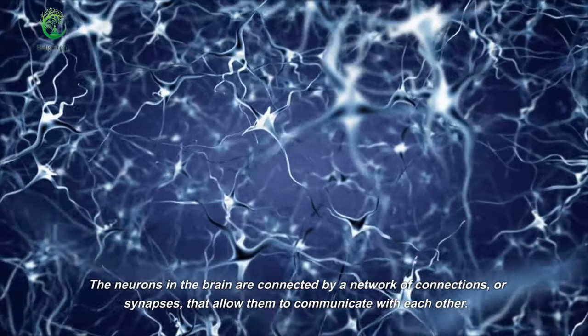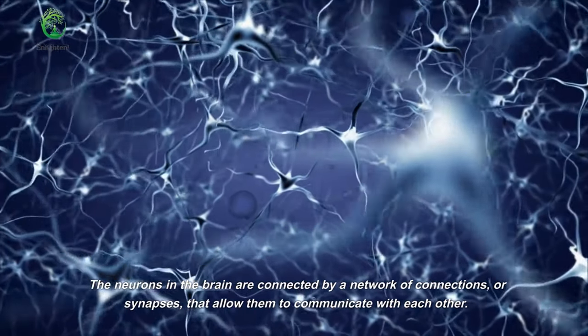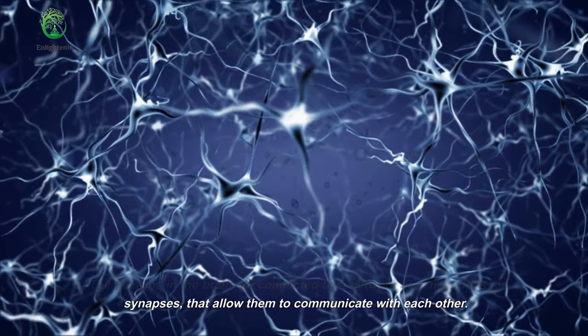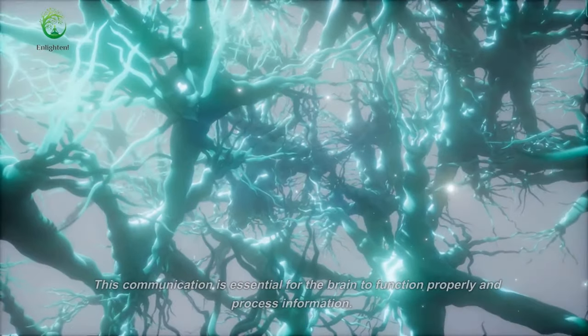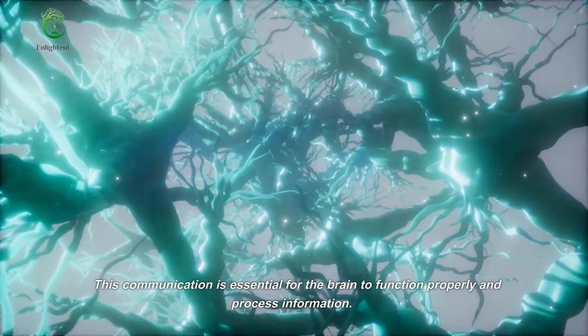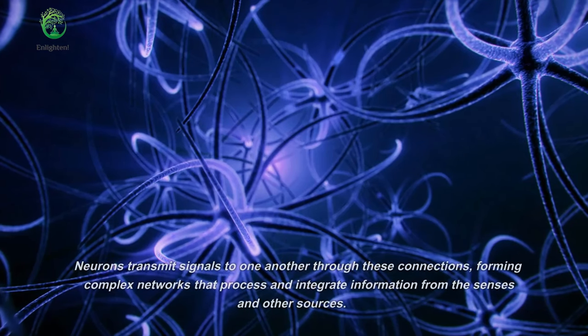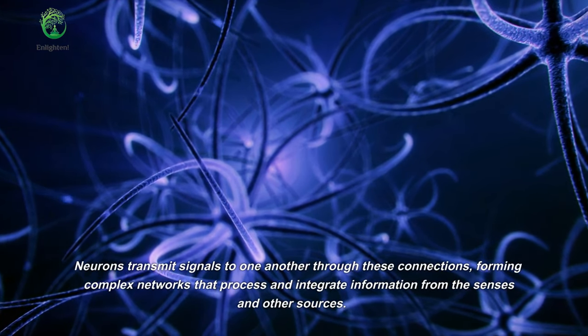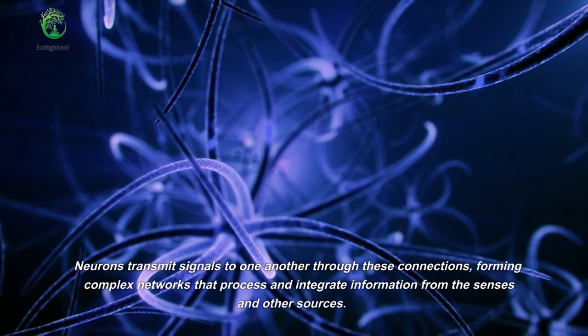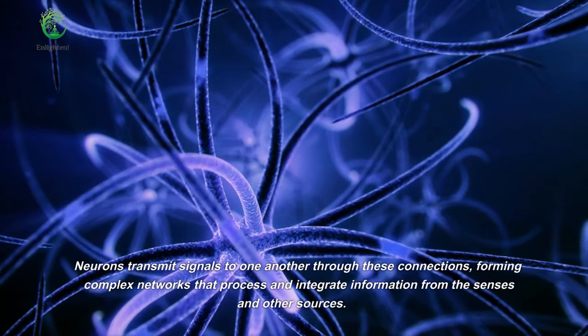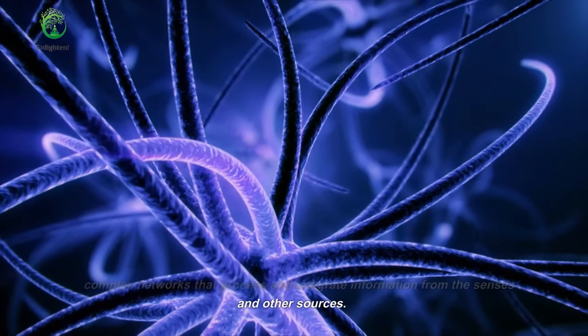The neurons in the brain are connected by a network of connections, or synapses, that allow them to communicate with each other. This communication is essential for the brain to function properly and process information. Neurons transmit signals to one another through these connections, forming complex networks that process and integrate information from the senses and other sources.